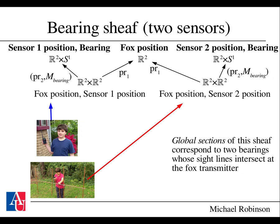This full consistency in the sheaf language is called a global section. Global sections of this very simple sheaf diagram correspond exactly to where the two bearings have sight lines that intersect at the fox transmitter. If there is some systematic noise, they won't intersect exactly at the fox transmitter, but they'll intersect near it — how near is governed by how much noise. You might say you could have done this without all of this fancy diagrammatic language, but systems engineers know that diagrams can get a lot more complicated than this.